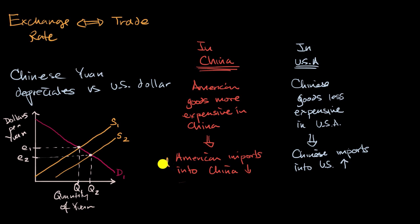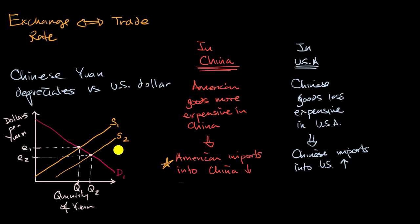What's interesting is that you might have a negative self-correcting feedback loop. If American imports into China go down, fewer Chinese people will be interested in converting Yuan into US dollars to buy goods, which might shift the supply curve back to the left. Similarly, if Chinese imports into the US go up, more Americans will want to convert dollars into Yuan, shifting the demand curve to the right — either of which could help the Chinese Yuan appreciate a bit.